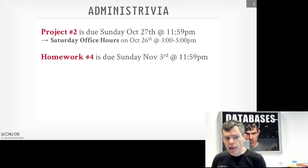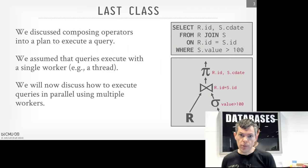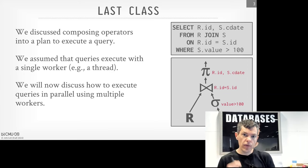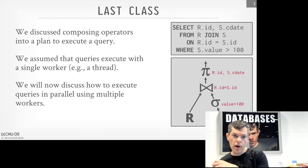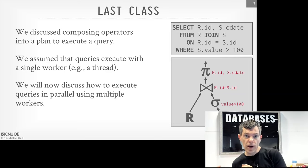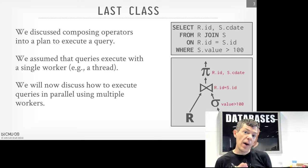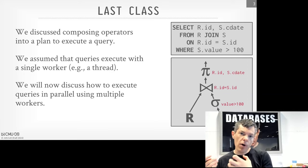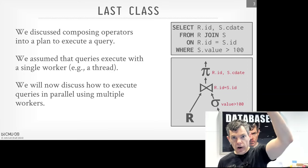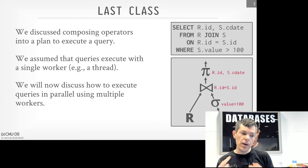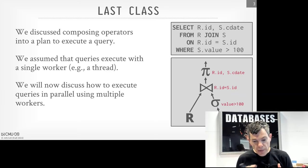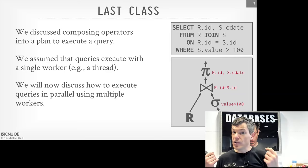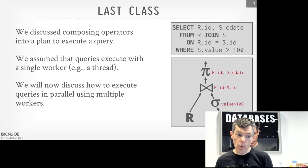Last class, we were talking about how we're actually going to execute queries. It was basically a discussion of how data moved between the operators in our query plan. We talked about whether you send a single tuple, all the tuples that an operator is going to emit, or a batch of them. We also discussed the control flow of the query plan — do you start at the top and pull data up, or start at the bottom and push data up? Today, we're talking about how we actually run these queries in parallel using multiple workers.